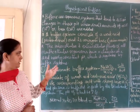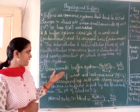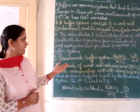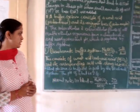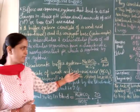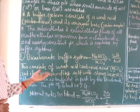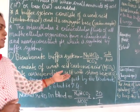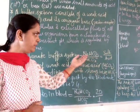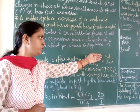First, we will study about the bicarbonate buffer system. This bicarbonate buffer system is made up of a weak acid, that is carbonic acid, and its corresponding salt with a strong base, that is bicarbonate — sodium bicarbonate.